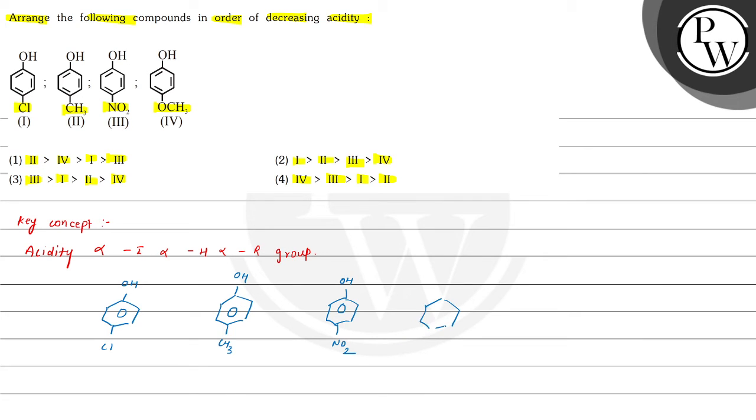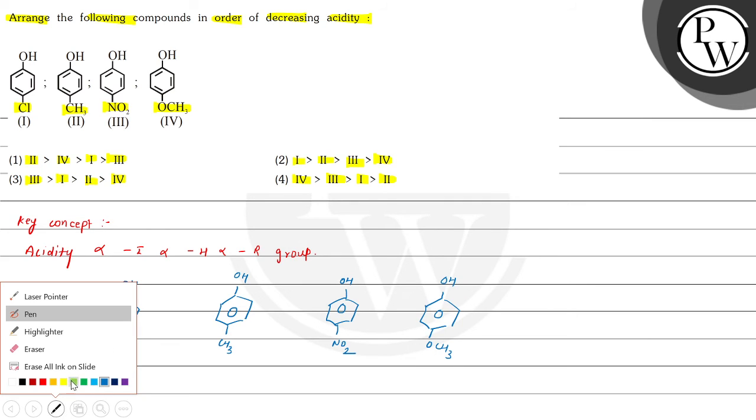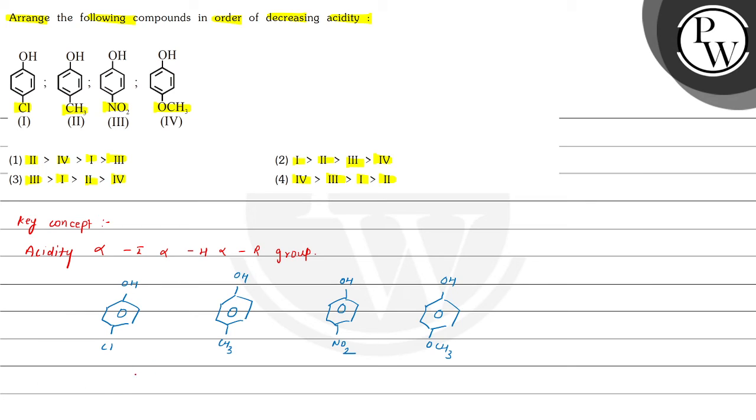And here in the fourth, a methoxy group, that is OCH3 group, is attached at the para position. Now we can see that the Cl group shows -I effect.